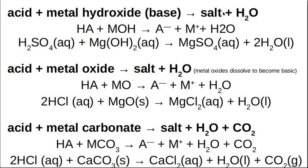The next one: an acid plus a base gives you a salt and water. The base is usually a hydroxide with a metal cation. So acid plus base gives you the anion, the metal cation, and water. For example, sulfuric acid and magnesium hydroxide gives you magnesium sulfate and water. The salt ends up in aqueous solution.